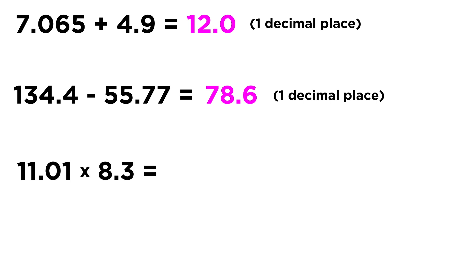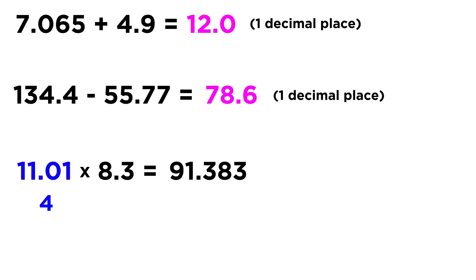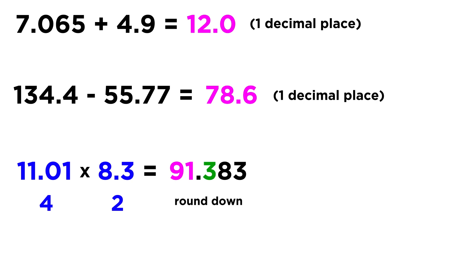Now looking at the multiplication: 11.01 times 8.3. We put that in the calculator and get 91.383. Now, the rule for multiplication and division states that our answer should have the same number of sig figs as the value with the fewest sig figs. The first value has four sig figs and the second has two sig figs, so our answer should have only two sig figs. The next digit is 3, which is less than 5, so we round down. Our answer is simply 91, which has two sig figs.